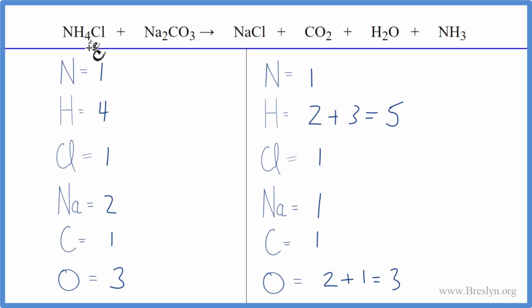In this equation we have NH4Cl plus Na2CO3. That's ammonium chloride plus sodium carbonate. It's a bit of a pain because we have all these different products here.